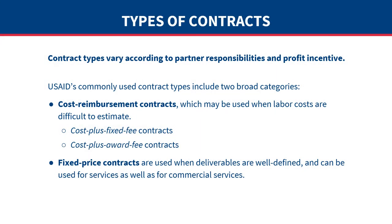Now let us review the types of contracts USAID might use. Contract types vary according to the type or complexity of the work to be performed, as well as the amount and nature of the profit incentive — also called a fee — offered to the contractor for meeting standards or goals.